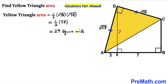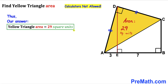Simplifying gives us 29 square units — the area of yellow triangle ACD. After all calculations, the area of yellow triangle ACD turns out to be 29 square units. That's our final answer. Thanks for watching and please don't forget to subscribe to my channel for more exciting videos. Bye!